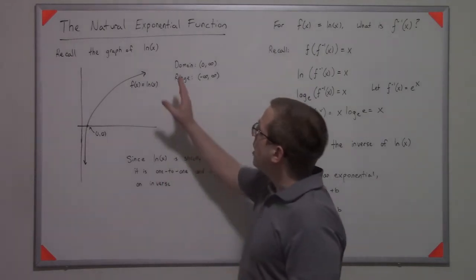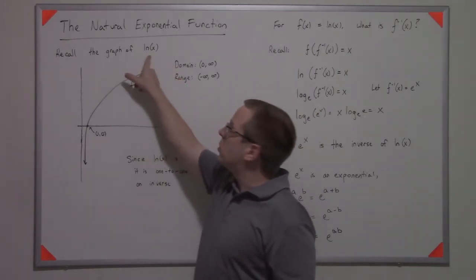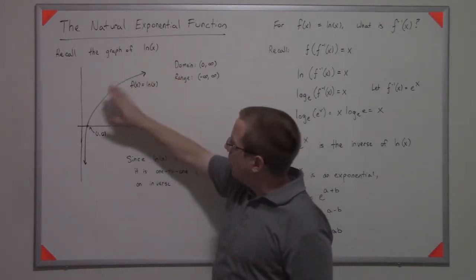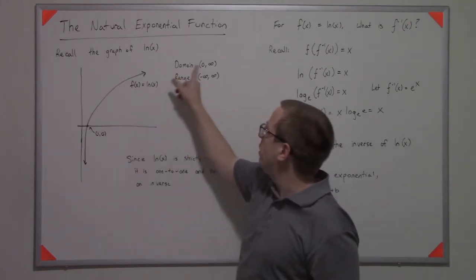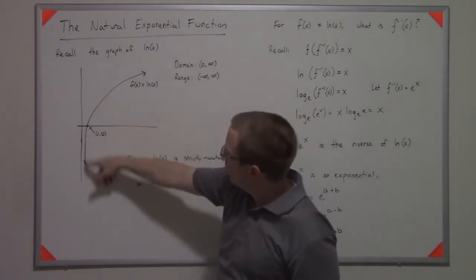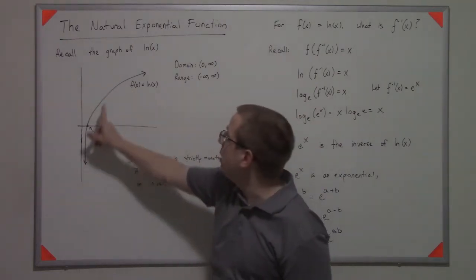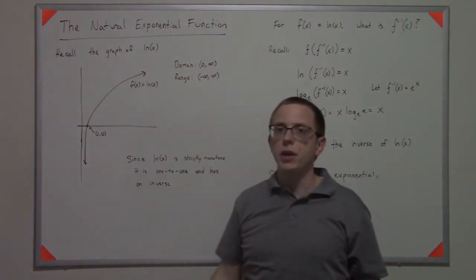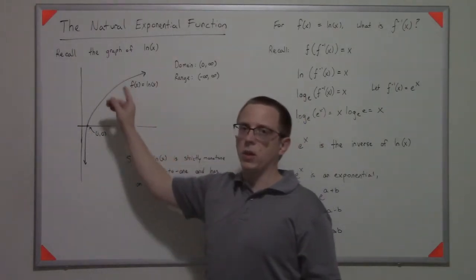So what you find is that if you have this graph of the natural log of x, its domain is from 0 to infinity, not inclusive, and its range is all real numbers. So it kind of goes all the way down to negative infinity and all the way up to positive infinity. But what you notice is that it never doubles back or anything like that.